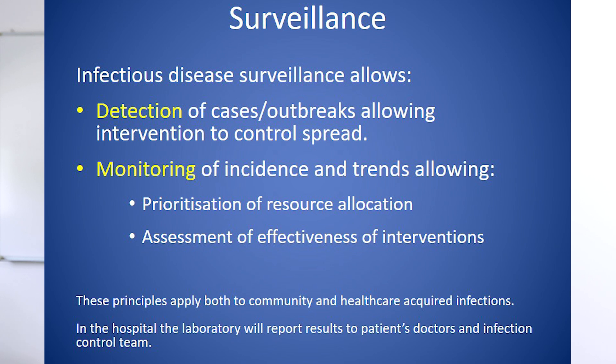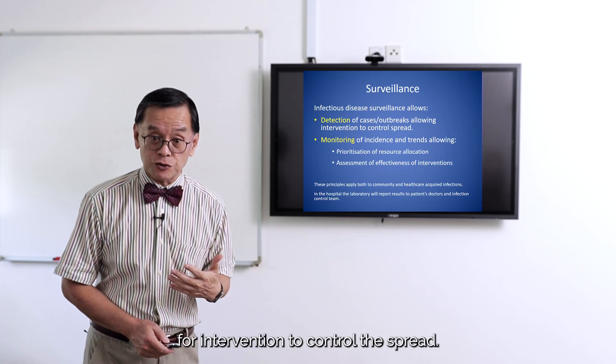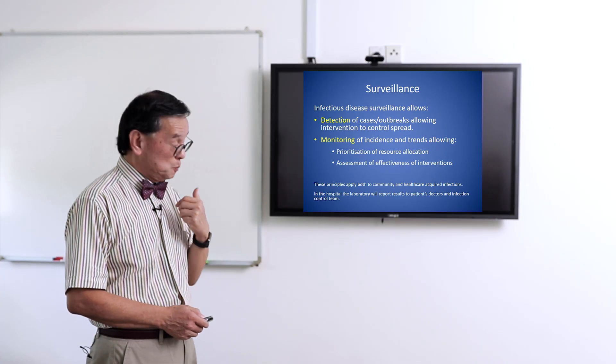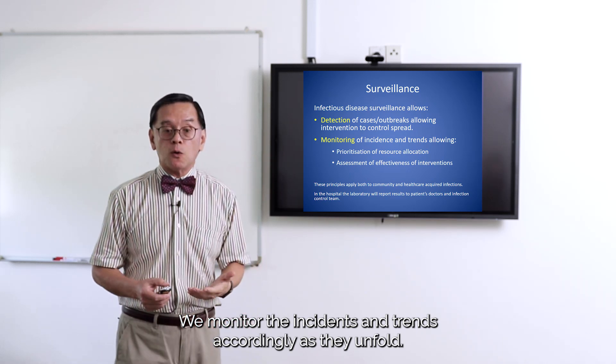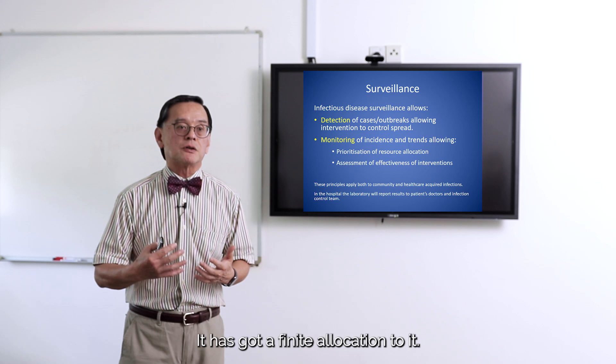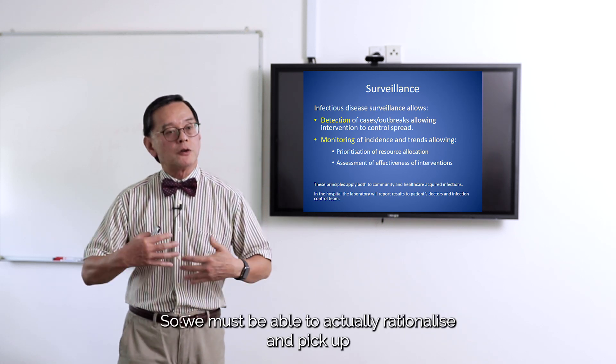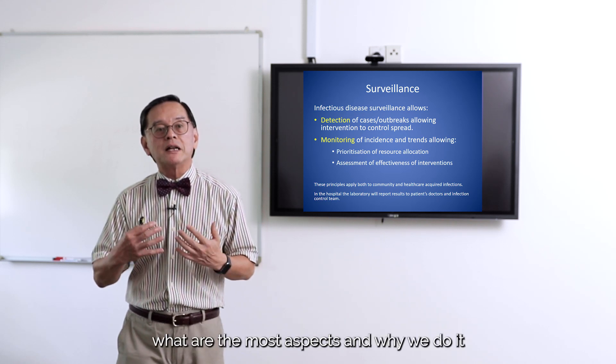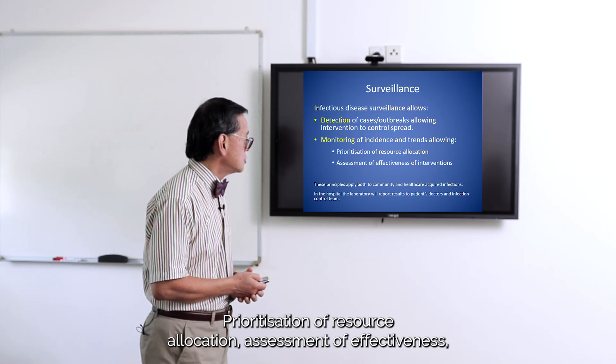Surveillance allows us to detect cases and outbreaks, hopefully giving us time for intervention to control the spread. We monitor incidence and trends so we can prioritize. Healthcare funding is not a bottomless pit — it has a finite allocation — so we must rationalize and identify which diseases have the most impact on individuals, the community, and the general public. This includes prioritization of resource allocation and assessment of the effectiveness of interventions, and these principles apply both to the community and hospital settings.